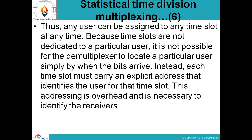Because time slots are not dedicated to a particular user, it is not possible for the demultiplexer to locate a particular user simply by when the bits arrive — कोई particular slot किसी particular user को allocate नहीं किया जाता है। Instead, each time slot must carry an explicit address that identifies the user for that time slot — इसमें explicit addressing का use किया जाता है जिससे user को identify करना easy होता है।